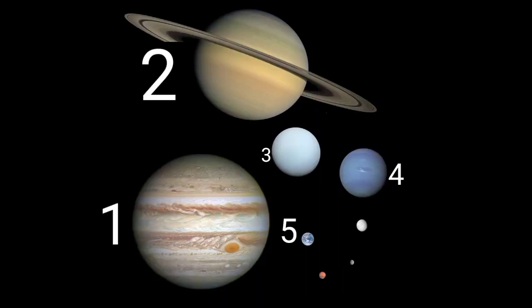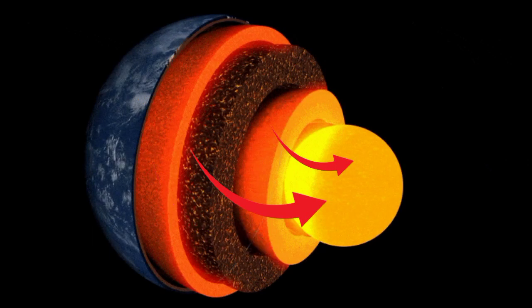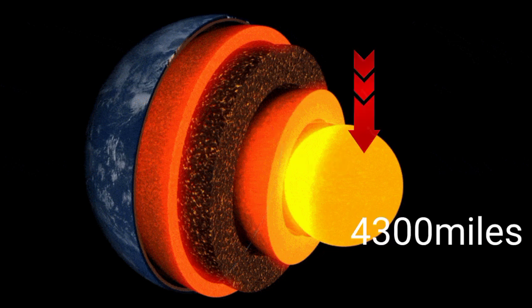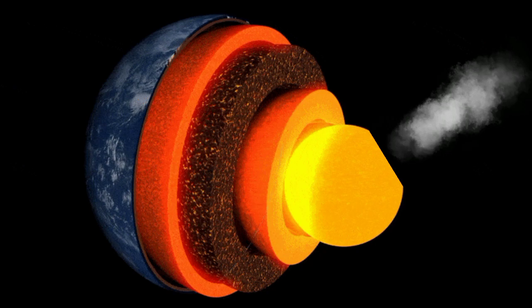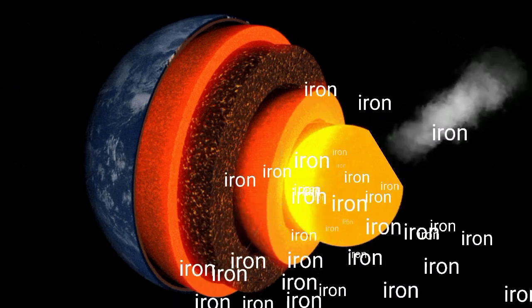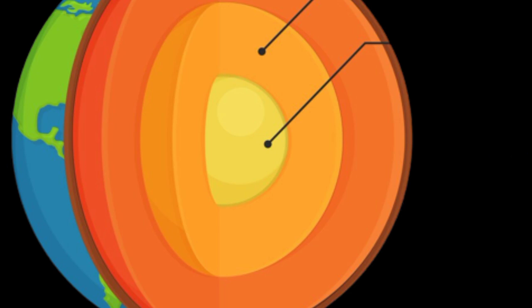Earth is the fifth largest planet in the solar system. It is made up of three layers: the core, the mantle, and the crust. The core is the center of the planet. It is about 4,300 miles across. The core is very hot. Most of the iron is located at the core. The mantle covers the core. It is about 1,800 miles thick.